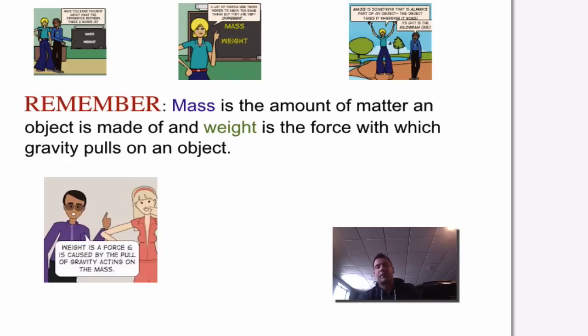You just have to remember one thing though. Mass is the amount of matter in an object, or how much or what the object's made of. And then the weight is the force at which gravity pulls on the object.